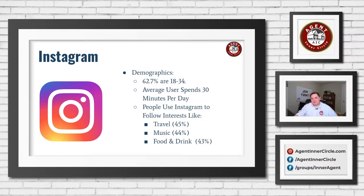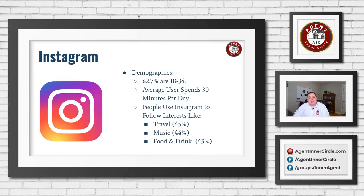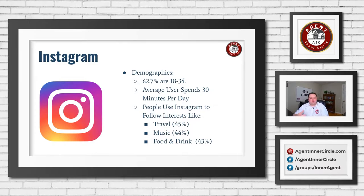The next big one is Instagram — 62.7% of users are 18 to 34. So we're moving to a slightly younger demographic, though still very much in the world of folks who are looking to buy homes. The average user spends about 30 minutes a day — actually less time than people spend on Facebook.